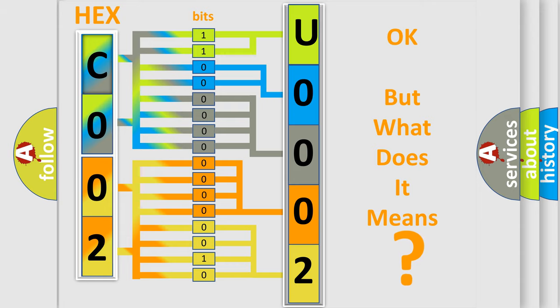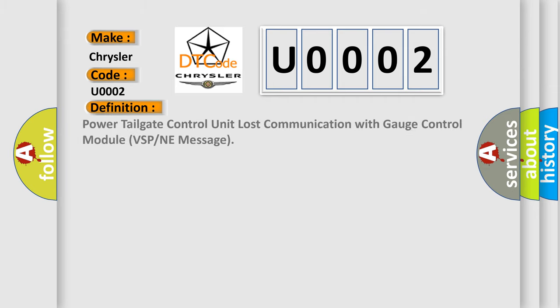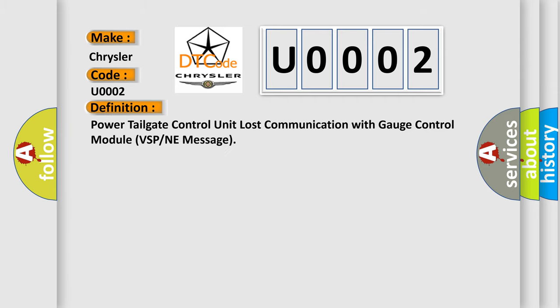So, what does the diagnostic trouble code U0002 interpret specifically for Chrysler car manufacturers? The basic definition is: Power tailgate control unit lost communication with gauge control module — VSP or NE message.